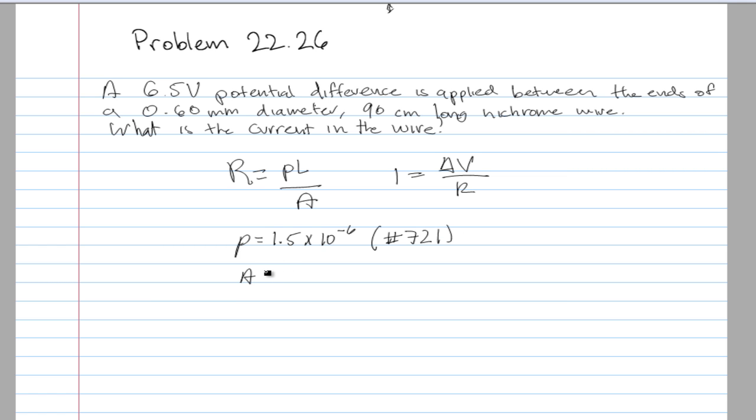For the area, they give us a diameter of 0.6 millimeters. Using that we can find the cross-sectional area: pi times the radius squared. Half of 0.6 is 0.3 for the radius, so pi times 0.3 times 10 to the negative 3 squared.